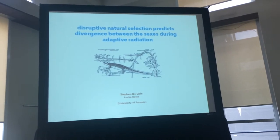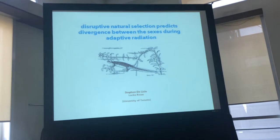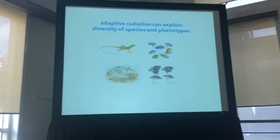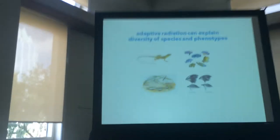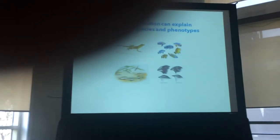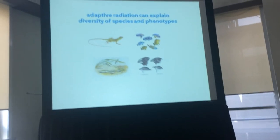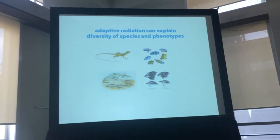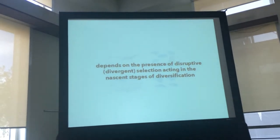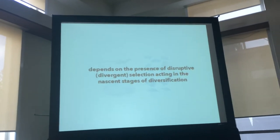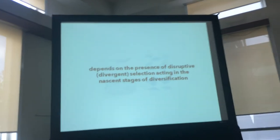One of the key concepts in explaining the origins of diversity is the idea of adaptive radiation. Key to the basic concept of adaptive radiation, and all theoretical treatments of it, is the presence of divergence or disruptive selection on ecologically relevant morphology in the early stages of ecological speciation and diversification.